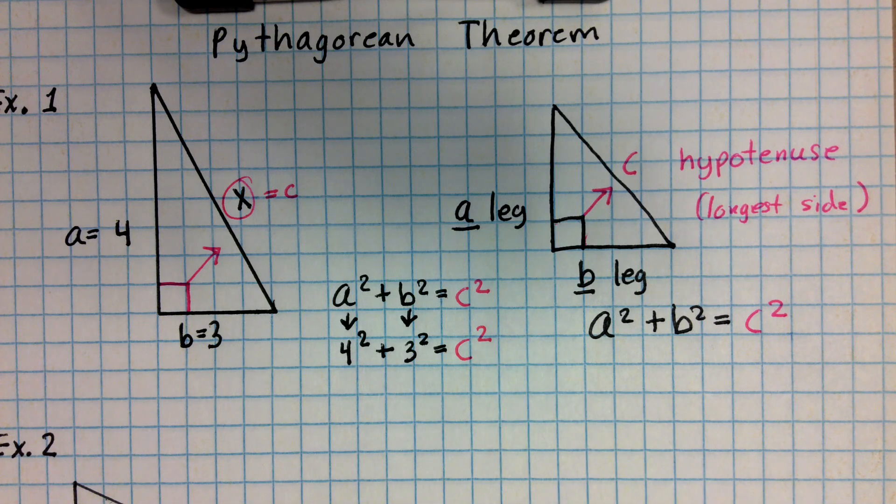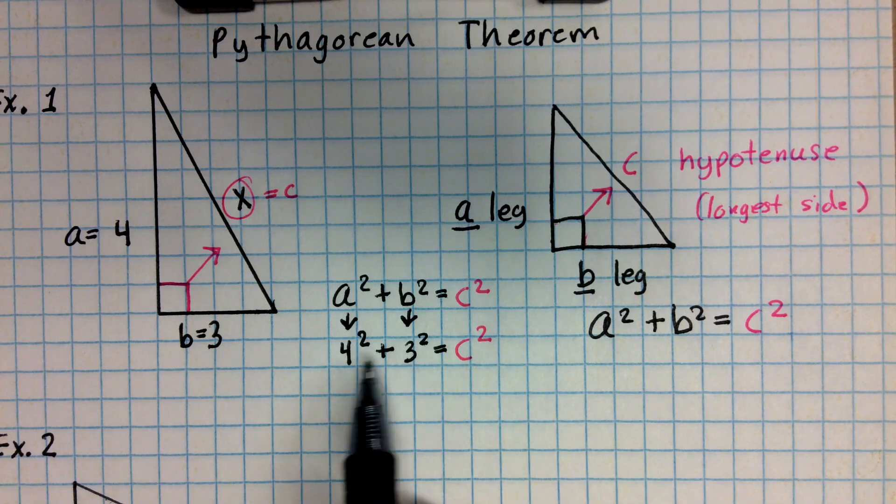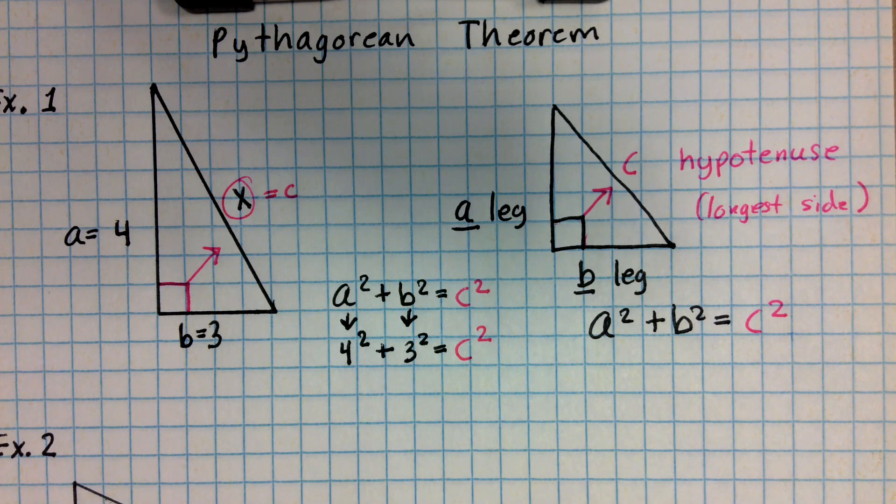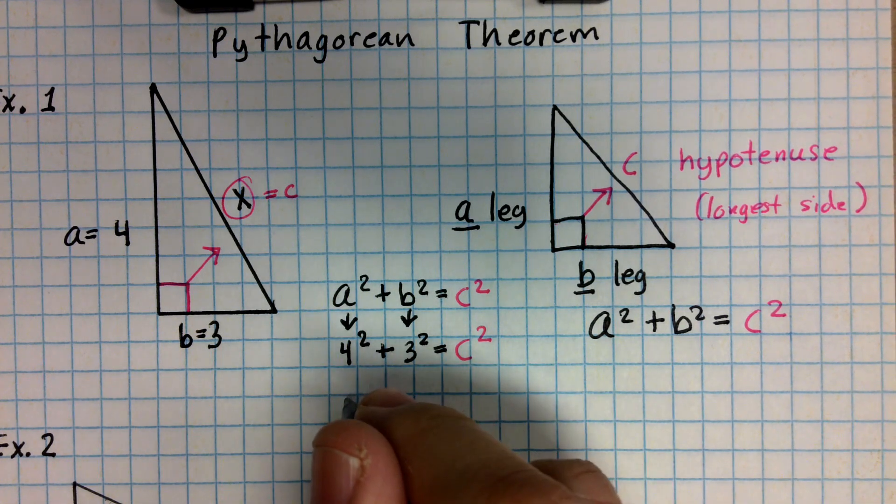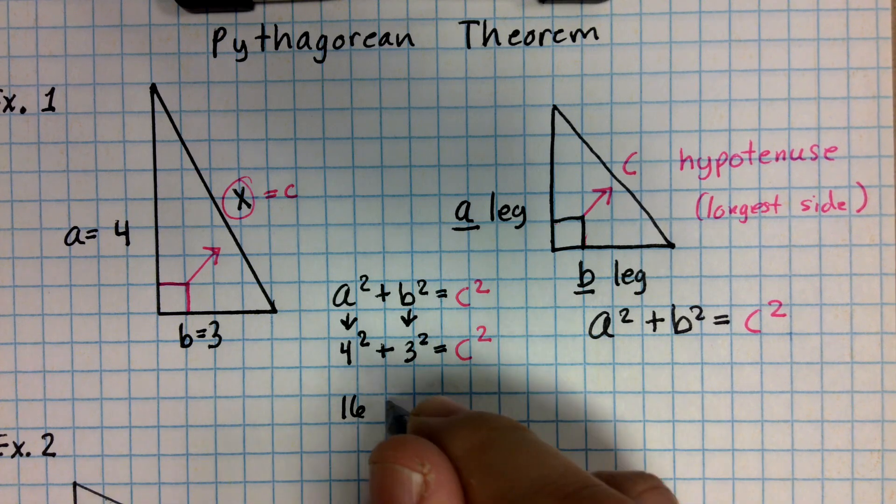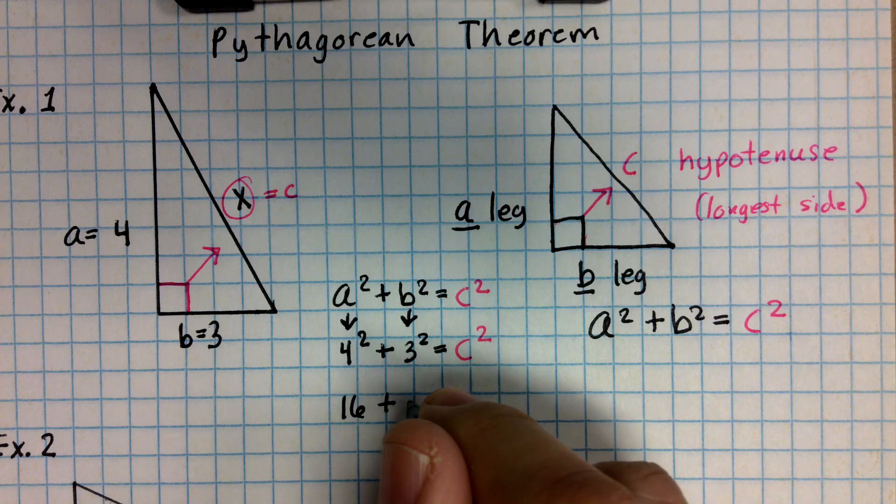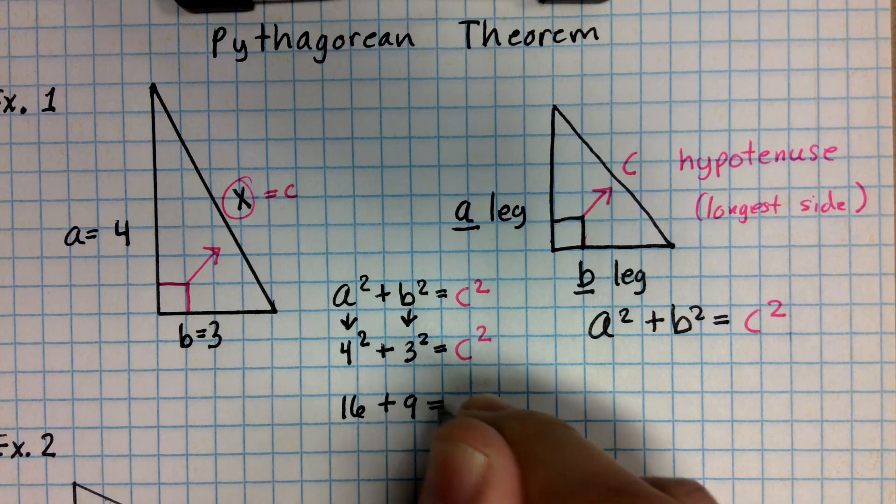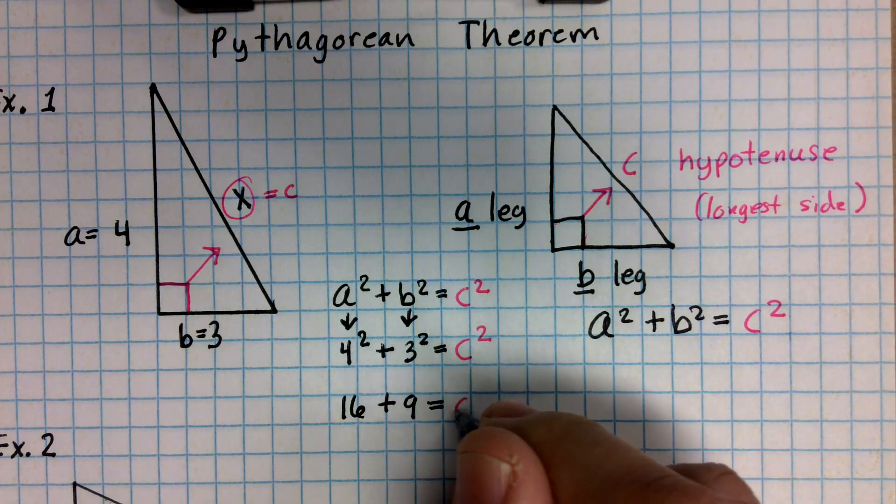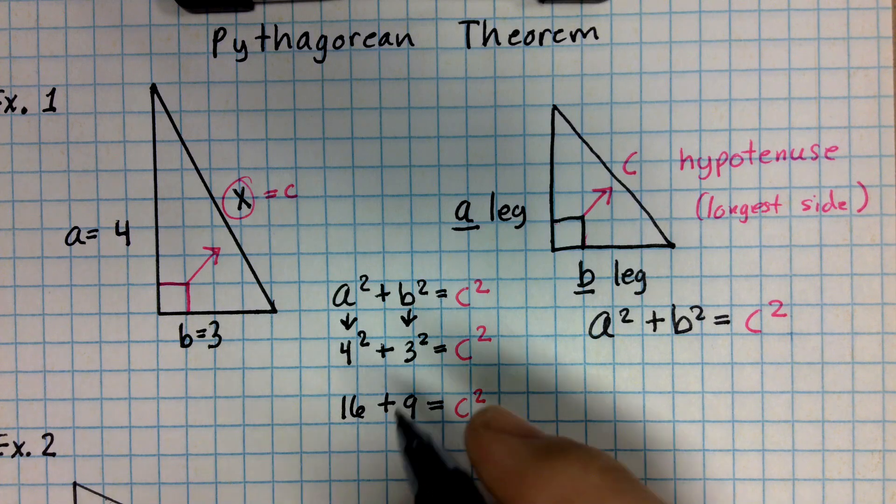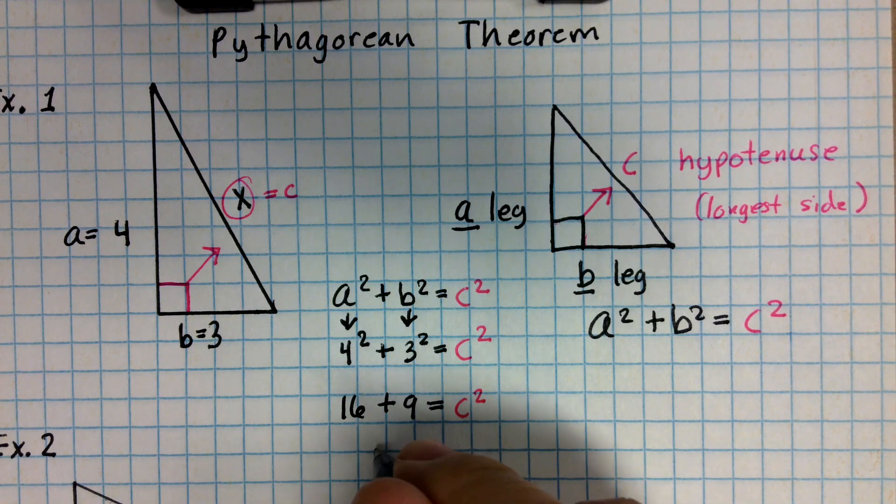So at this point, I've got two options. I could just add this together with a calculator. But for this example, I'm going to go ahead and do it by hand. And 4 squared is just 4 times 4, which gives me 16. And 3 squared is just 3 times 3, which gives me 9. And this is all equal to C squared. Now, if I add 16 plus 9, that's going to give me 25.